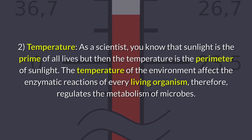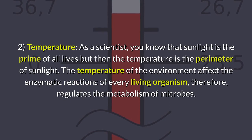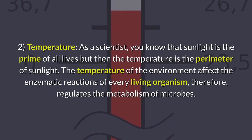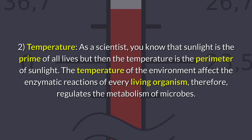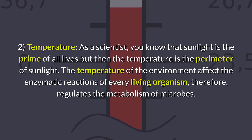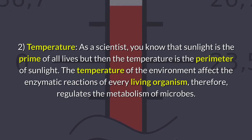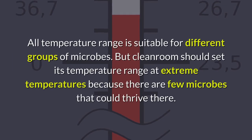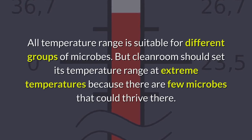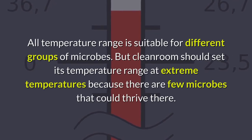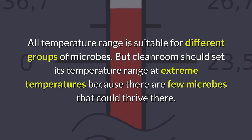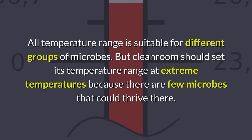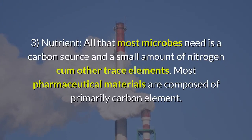Two: temperature. As a scientist, you know that sunlight is the prime of all life, but temperature is the parameter of sunlight. The temperature of the environment affects the enzymatic reactions of every living organism and therefore regulates the metabolism of microbes. All temperature ranges are suitable for different groups of microbes, but clean rooms should set their temperature range at extreme temperatures, because there are few microbes that could thrive there.